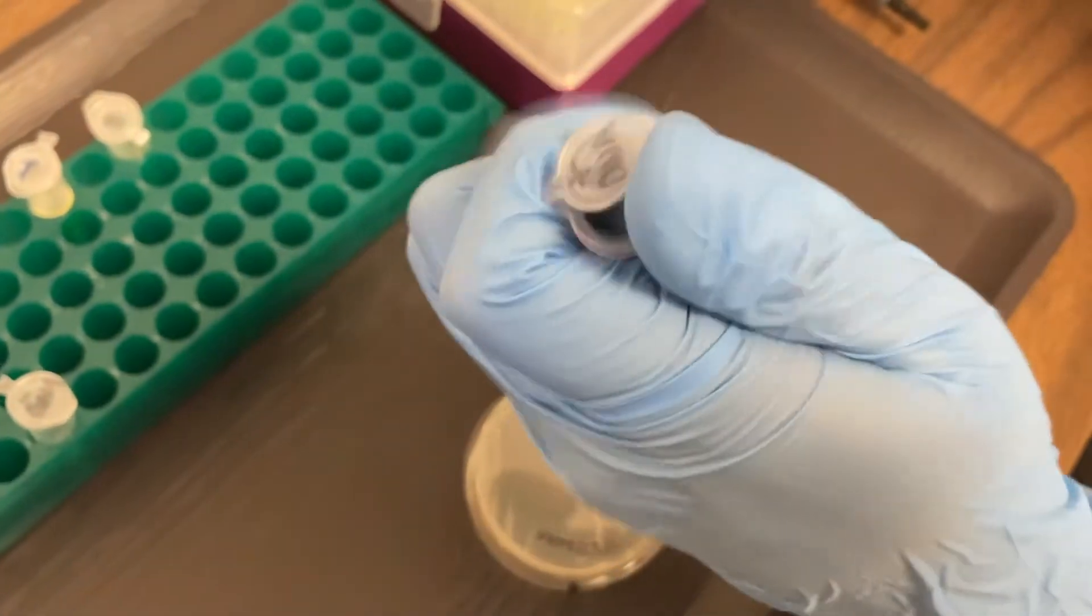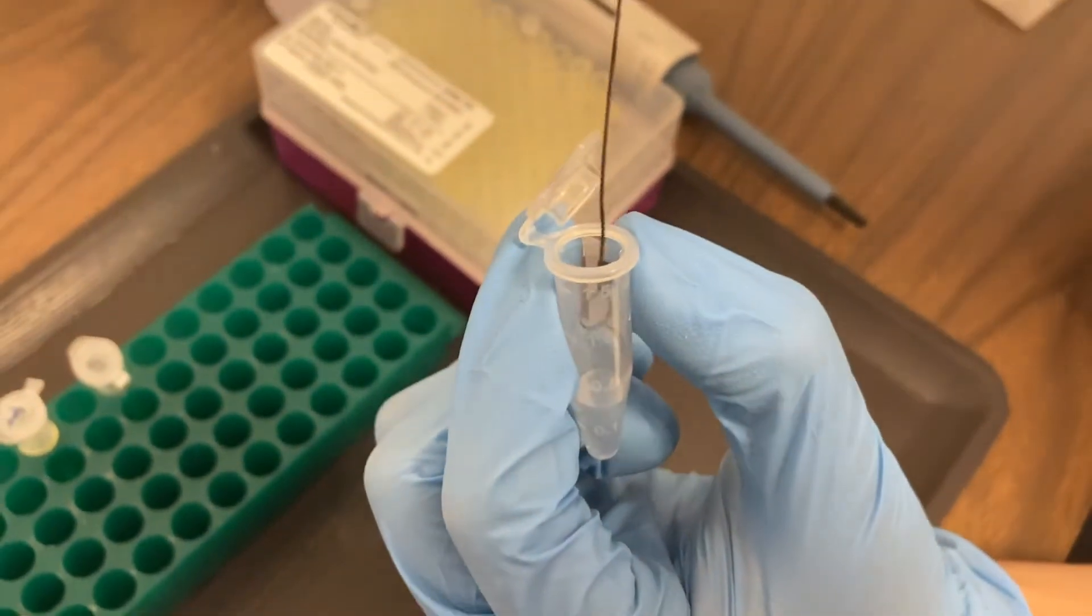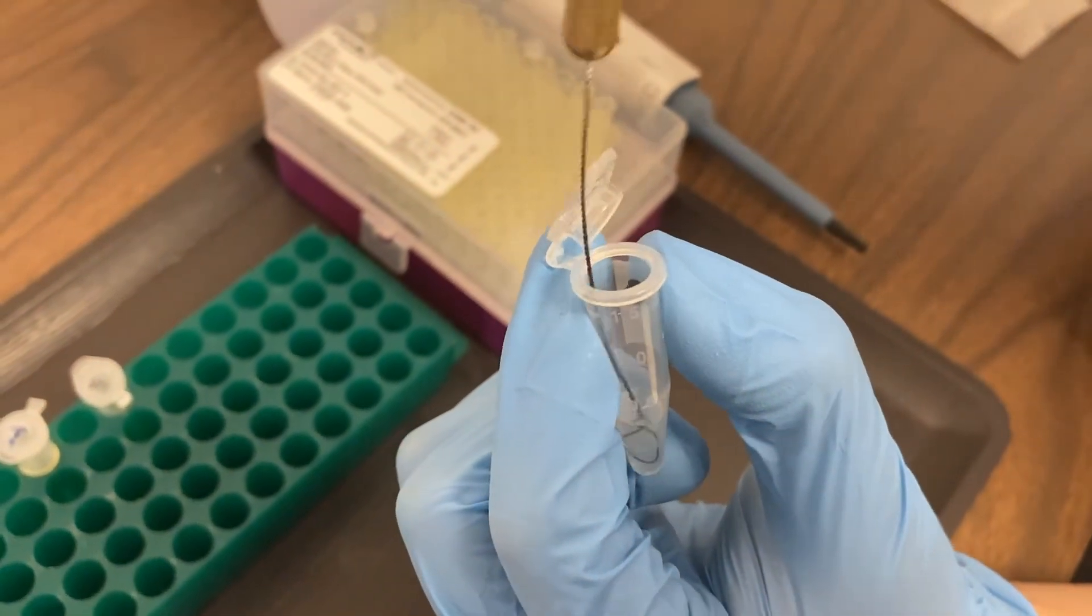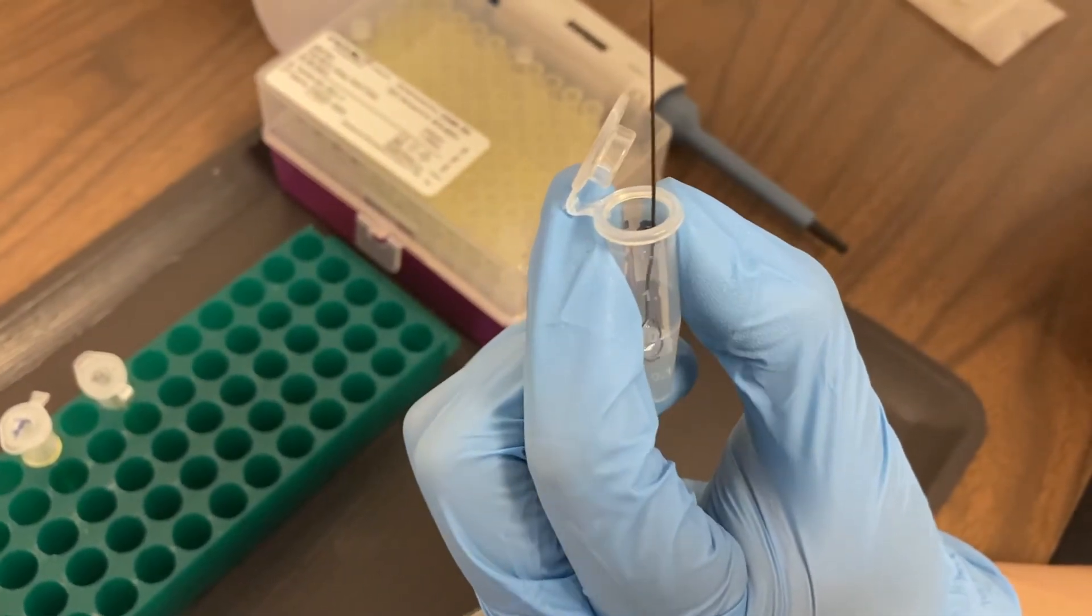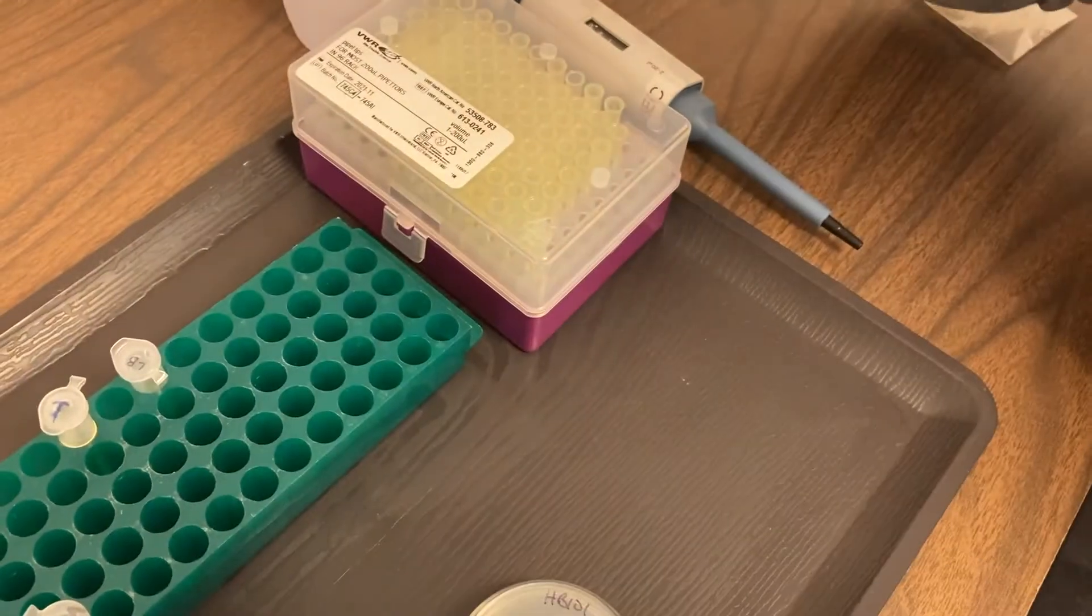We're going to put this in a tube labeled plus DNA. Now inside of this tube is calcium chloride. We're going to stab and twizzle and make sure we get the bacteria off of the loop and into the calcium chloride.